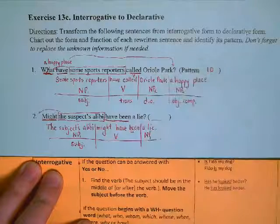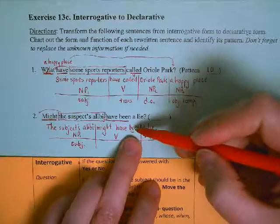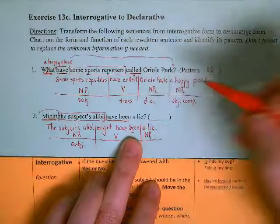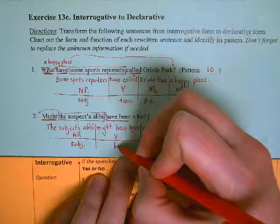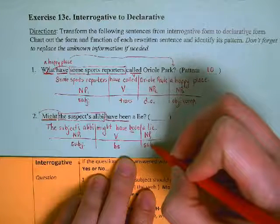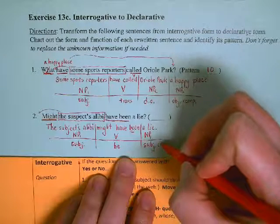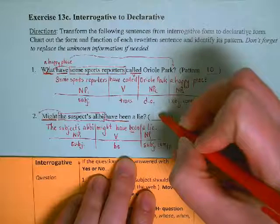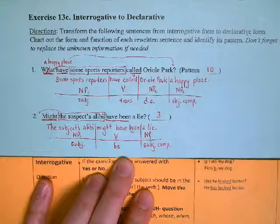So this is a be-verb, and we have our subject complement that's a noun phrase. So this one's pattern three.